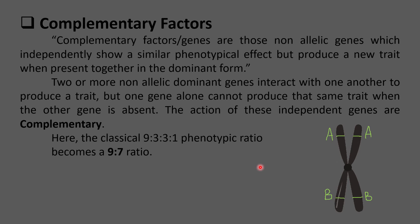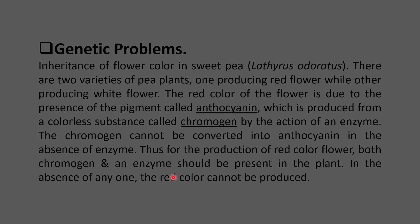That is how complementary factors work — the action of these two independent genes are always complementary to each other. This is how the classical phenotypic ratio becomes 9:7, with only two phenotypic classes being produced. To better understand this, an example can be studied: the inheritance of flower color of Lathyrus odoratus, the sweet pea, which was studied by Bateson and Punnett in the year 1906.